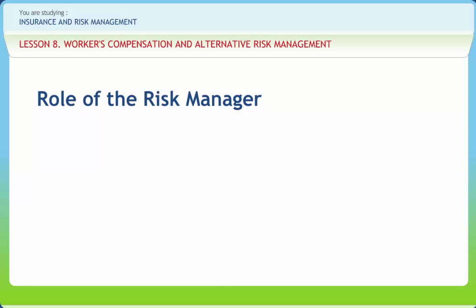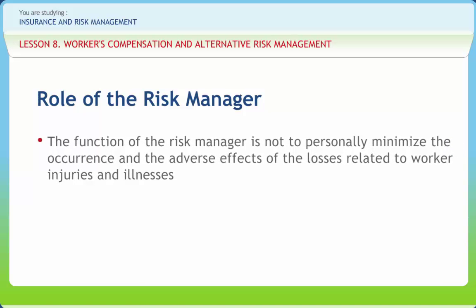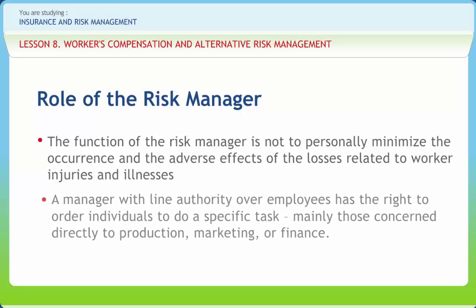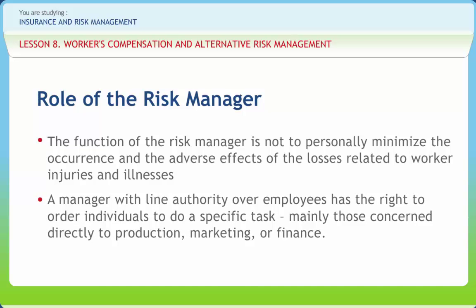Secondly, it is important to determine the types and methods of communication between the risk manager and all other managers. The function of the risk manager is not to personally minimize the occurrence and adverse effects of losses related to worker injuries and illnesses, but instead to coordinate the efforts of other managers in the prevention of injuries and illnesses for which each of them has some responsibility and therefore control. A manager with line authority over employees has the right to order individuals to do a specific task, mainly those concerned directly to production, marketing or finance. The staff manager has the right to advise and persuade these other managers to take actions designed to minimize the potential for worker injury or illness. These managers may decide to accept or reject the advice and as such are responsible for the results of that decision.